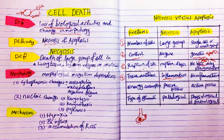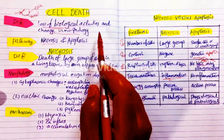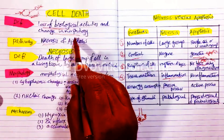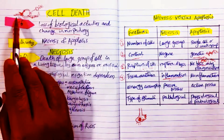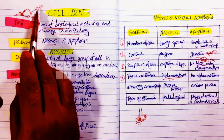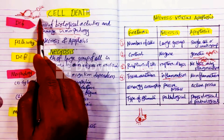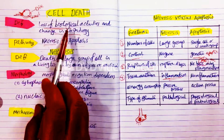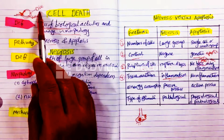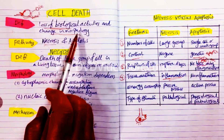First of all you have to know the definition of cell death. Cell death means loss of biological activity of the cell and change in its morphology. If there is a stress on a cell, especially in cases of severe stress, this cell has two pathways: number one to die, or to adapt. If the cell fails to adapt, failure of adaptation results in cell death — loss of biological activity plus change in the morphology of the cell.